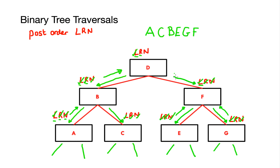Once completed all the rules at F, I move back up to my root node. I've completed the left subtree of D and the right subtree of D, and the only thing left is to take the node at D and write that down. The final post-order list is A, C, B, E, G, F and D.